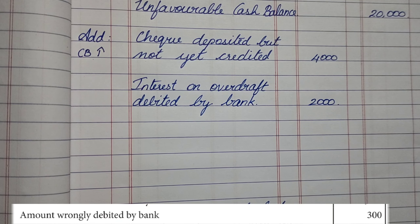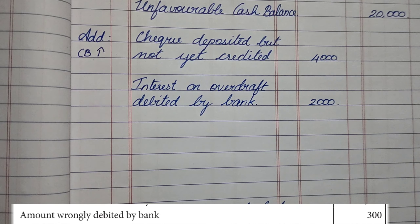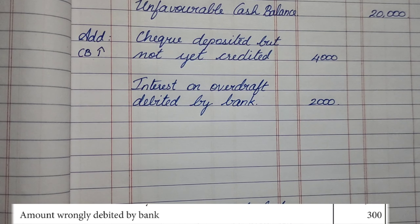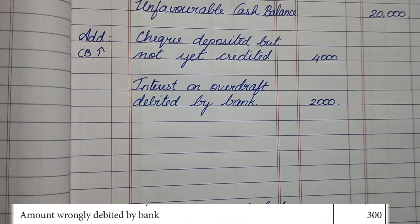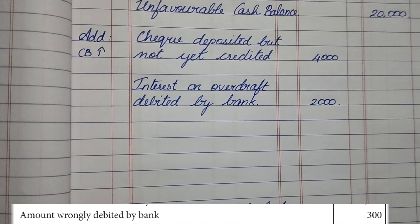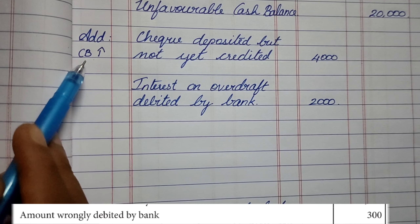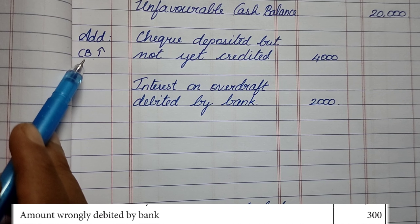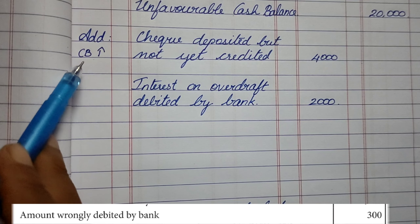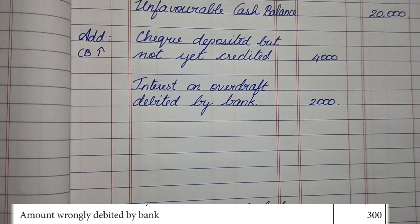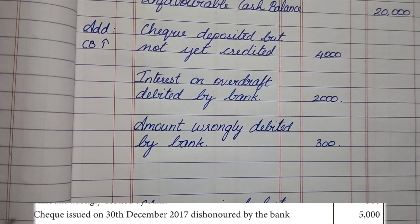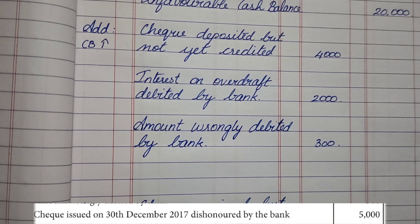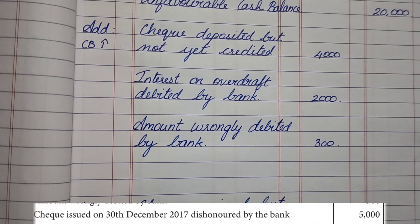Next is amount wrongly debited by the bank. A debit in the bank again means withdrawal. The bank has wrongly entered an amount on the withdrawal side, so the passbook decreases. Since the cash book has no record of this wrong debit, the cash book is relatively increasing, so we place this item in the Add category.